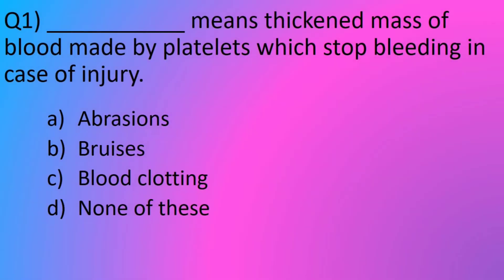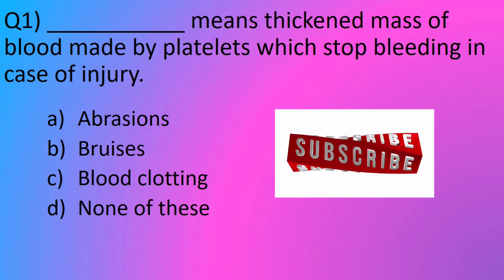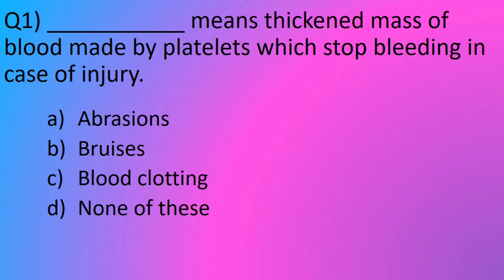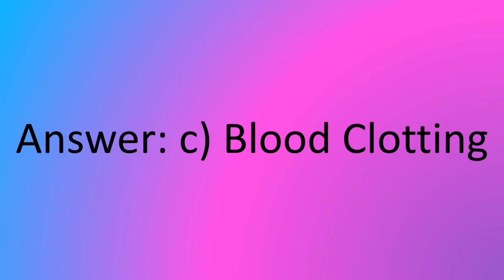Question No. 1: Dash means thickened mass of blood made by platelets which stop bleeding in case of injury. Option A: Abrasions. Option B: Bruises. Option C: Blood Clotting. Option D: None of these. The answer is Option C: Blood Clotting.